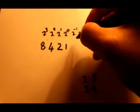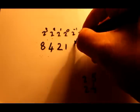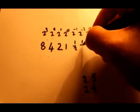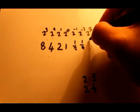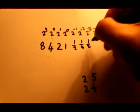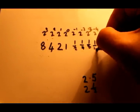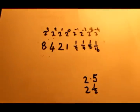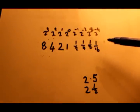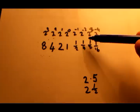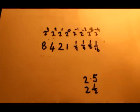So if we halve that number we get a half, halve it again we get a quarter, halve it again we get an eighth, and halve it again we get a sixteenth. Now if we go from right to left: double one sixteenth you get one eighth, double that you get one quarter, double that you get a half, double that you get a whole. So it works exactly the same.